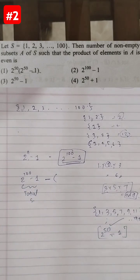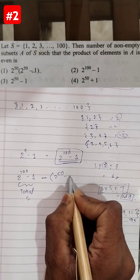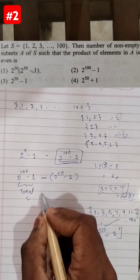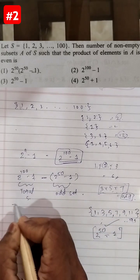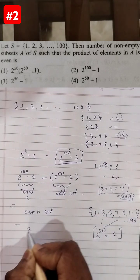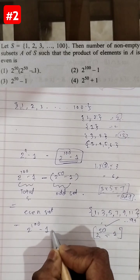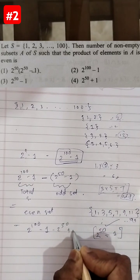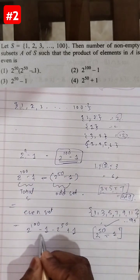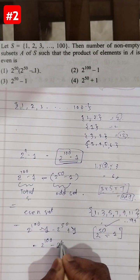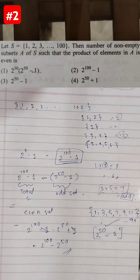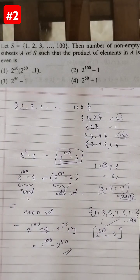So the number of subsets with an odd product is 2 raised to 50 minus 1. Therefore, the number of subsets with an even product equals (2 raised to 100 minus 1) minus (2 raised to 50 minus 1), which simplifies to 2 raised to 100 minus 2 raised to 50. This is the answer, which corresponds to option number 1.